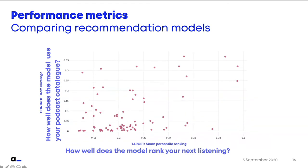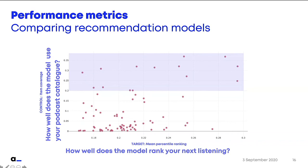We also have a control metric, which is item coverage — measuring how well the model exploits all of our podcast catalog. We don't want a model that always recommends the same 100 podcasts when we have thousands available. We said our control metric requires models to have an item coverage of more than 20%. Restricted to those, the mean percentile ranking is best for this dot here on the left. This is how we chose the models.